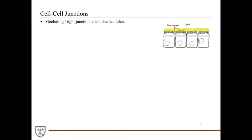There are a lot of these in histology, so watch out for them. The tight junctions are located on the apical regions of the lateral cell membranes. We have to remember that the cells are actually three-dimensional, so the tight junctions actually go all the way around the periphery of the cell membrane, much like a belt.